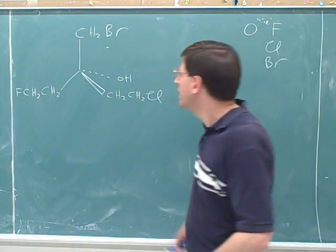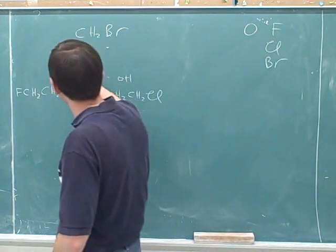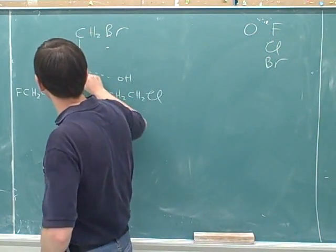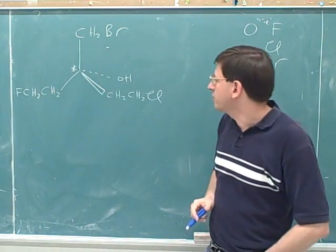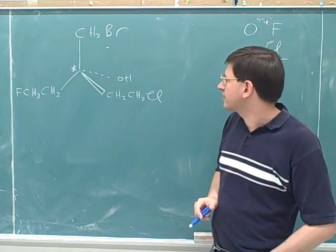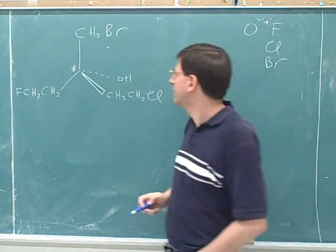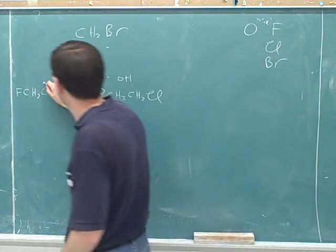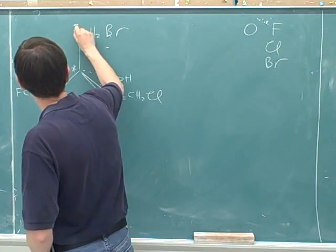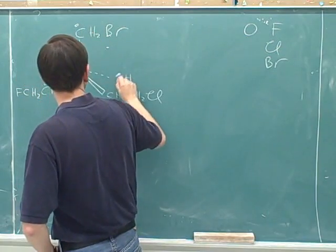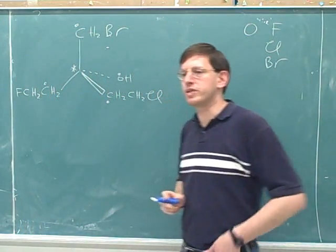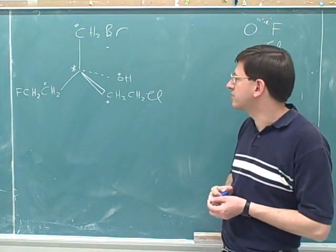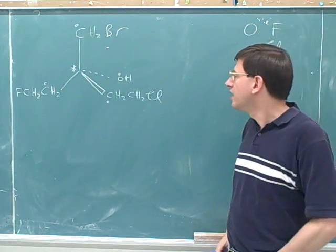Should we look at it together? We can start by putting an asterisk on the stereocenter. Then, which are the atoms that should get the dots? Carbon. Here are our dots. We put dots on the atoms that are directly connected to the stereocenter.